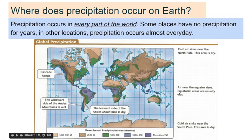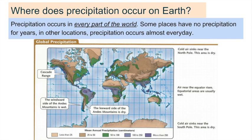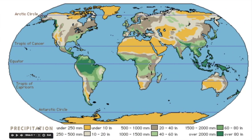Air near the equator rises, so equatorial areas are usually wet. Over here we have some mountain ranges — mountains cause air to rise, cooling it and causing condensation, producing precipitation on the windward side. The leeward side of the mountain ranges is actually dry because the water was forced out. The same thing happens on the windward side of the mountain range. Another graphic here depicts the same patterns in inches of precipitation.